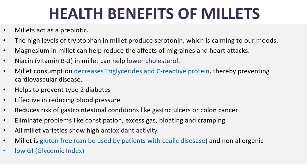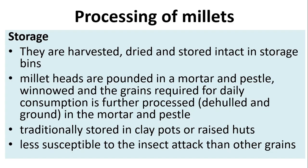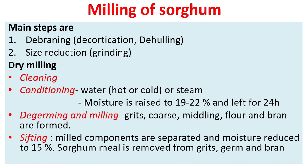Millets are known as non-allergenic and have a low glycemic index. Processing and storage: millets are harvested, dried, and stored intact in storage bins. Millet heads are pounded in a mortar and pestle. Grains required for daily consumption are further processed, dehydrated, and ground, and traditionally stored in clay pots or raised huts. They are less susceptible to insect attack than other grains, and as they grow in semi-arid regions, fungal attack is also very low.